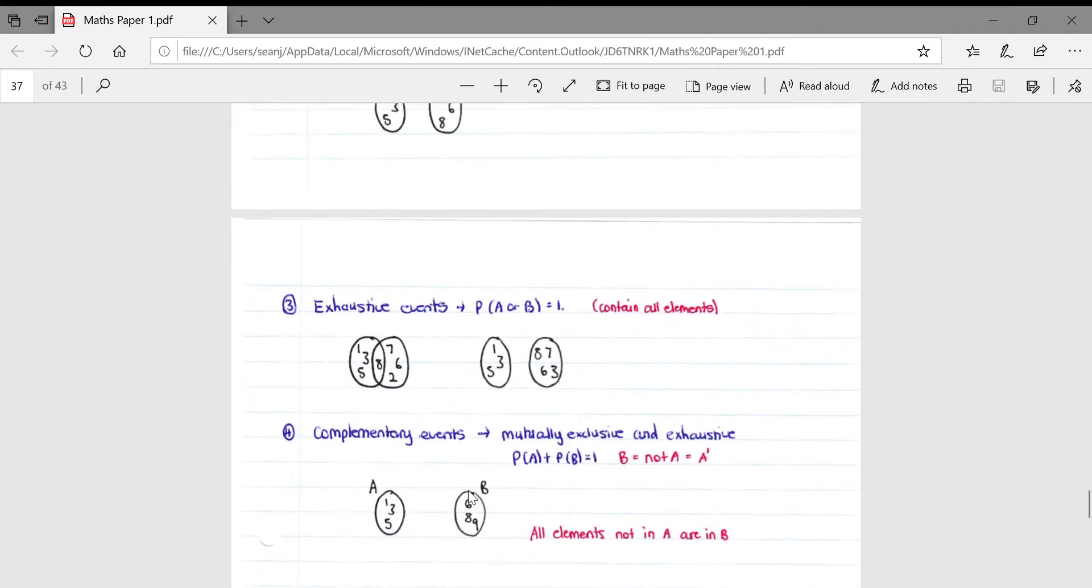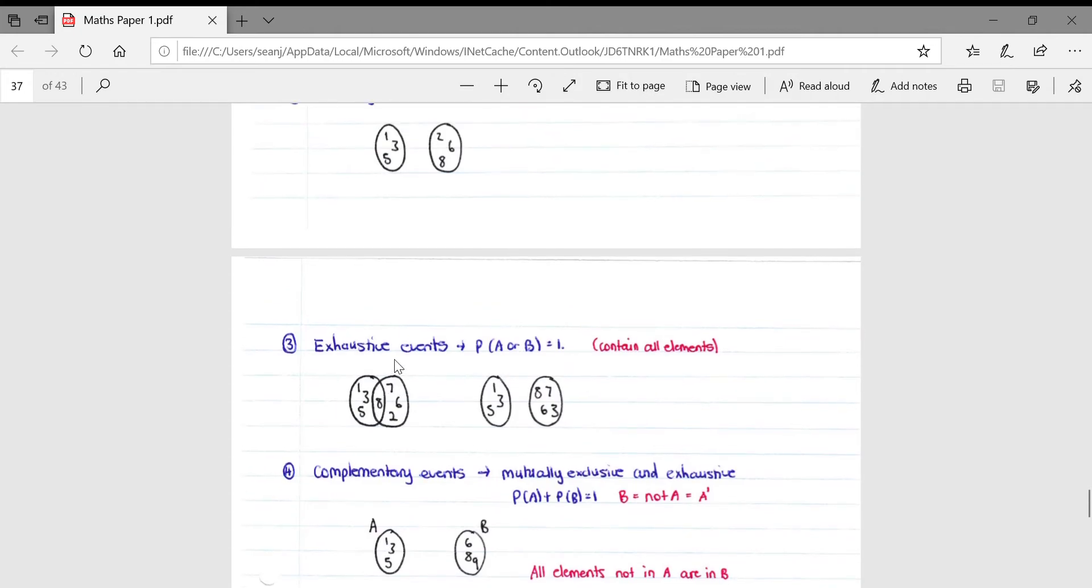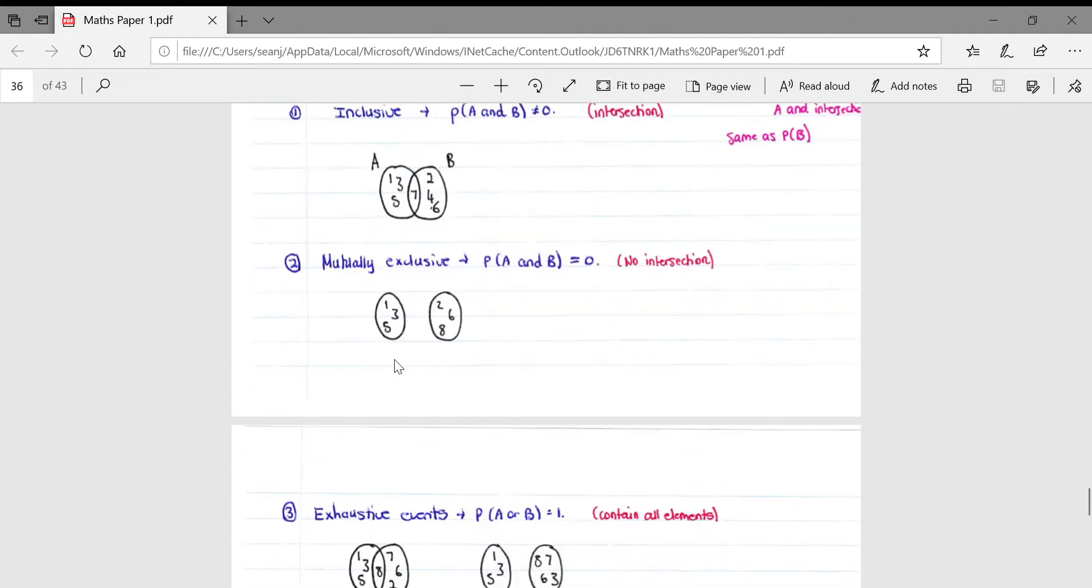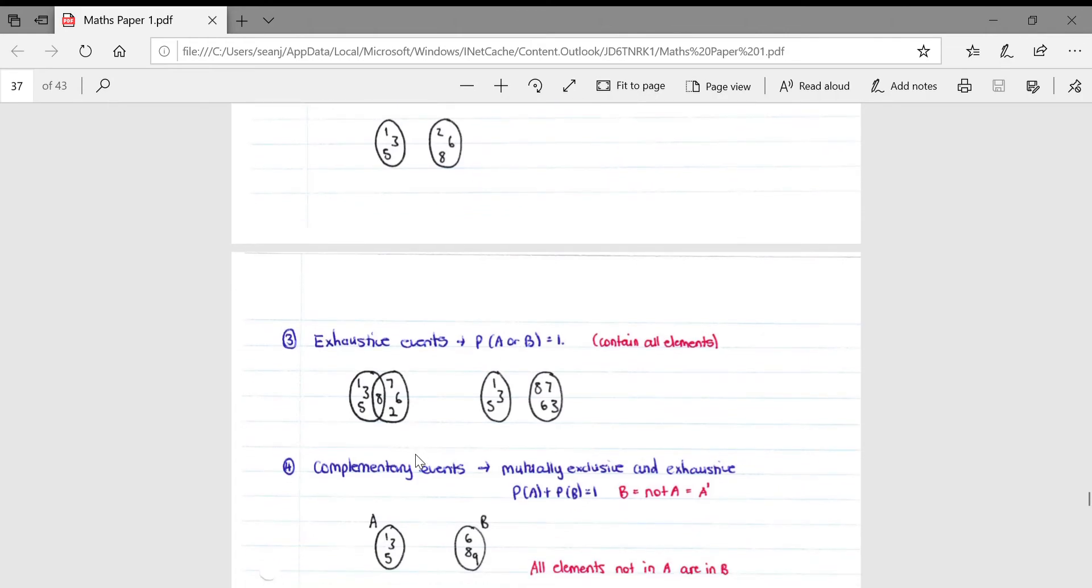Just going back to here, so as you can see in these two Venn diagrams, they can either be mutually exclusive or inclusive events, but there's no numbers or no probability numbers on the outside of the circles, which would simply mean that you have a hundred percent probability of either getting A or B.